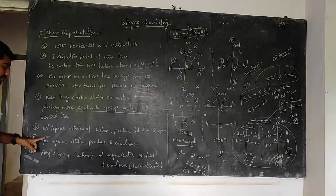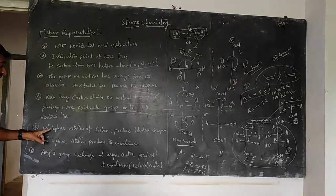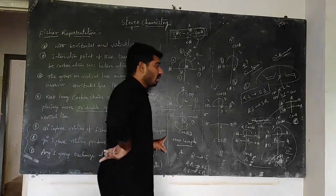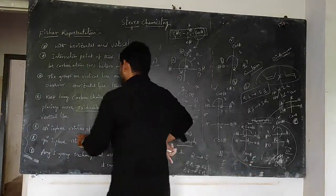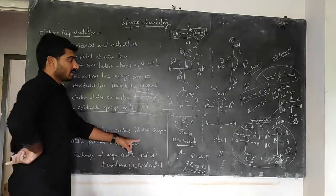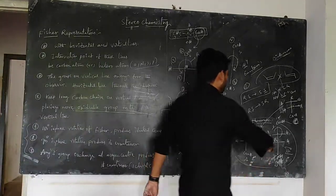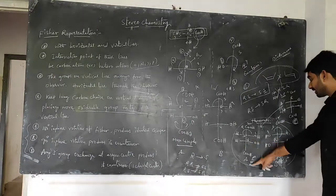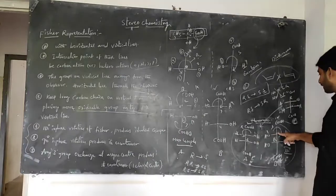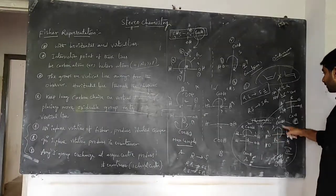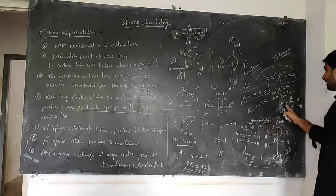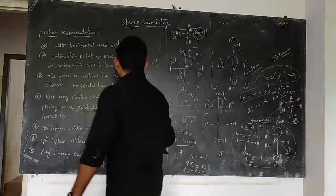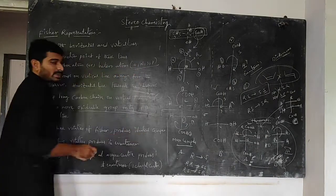Regarding the last three points of Fischer projection rules: 180-degree in-plane rotation of a Fischer projection produces an identical compound (homomer). We perform 180-degree in-plane rotation — rotating on the board only — to check the relationship between two given molecules.